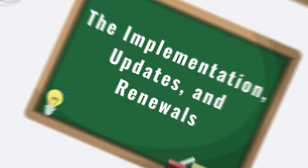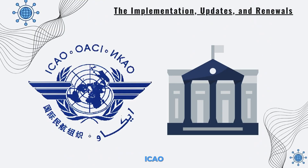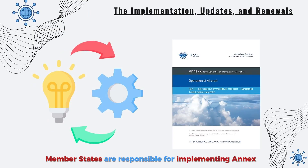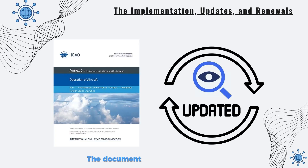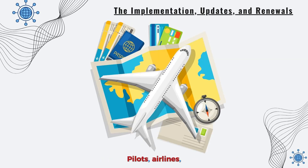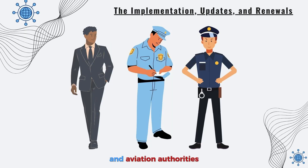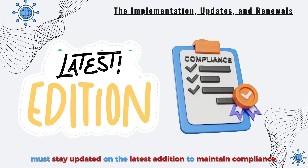Let's cover the implementation, updates, and renewals. Aikau member states are responsible for implementing Annex 6 into their national regulations. The document is regularly reviewed and updated to reflect ongoing advancements in aviation. Pilots, airlines, and aviation authorities must stay updated on the latest edition to maintain compliance.